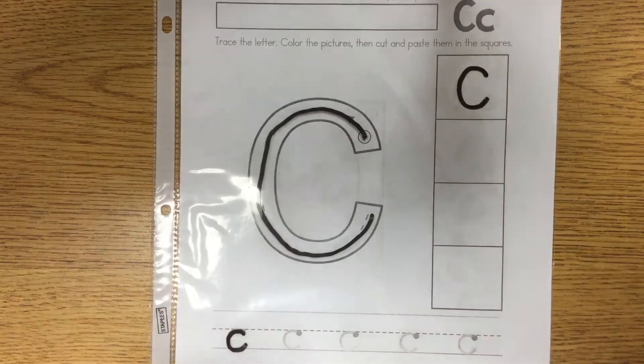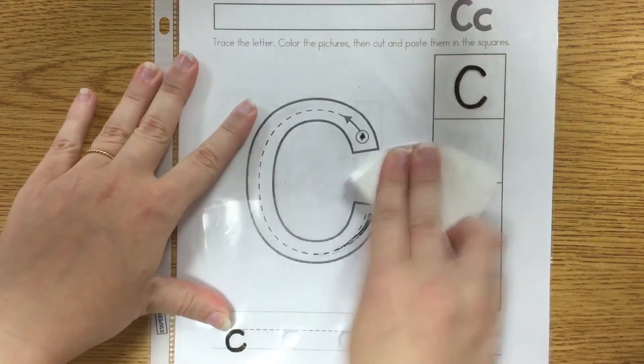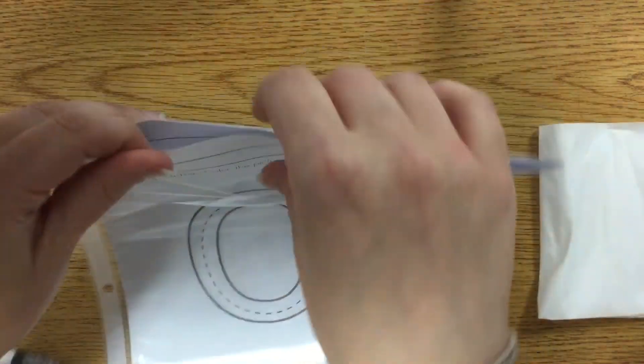So the great thing about this plastic is that you can just use a tissue or a napkin or whatever and wipe it right off and have your child practice again. And then you just switch out the pages.